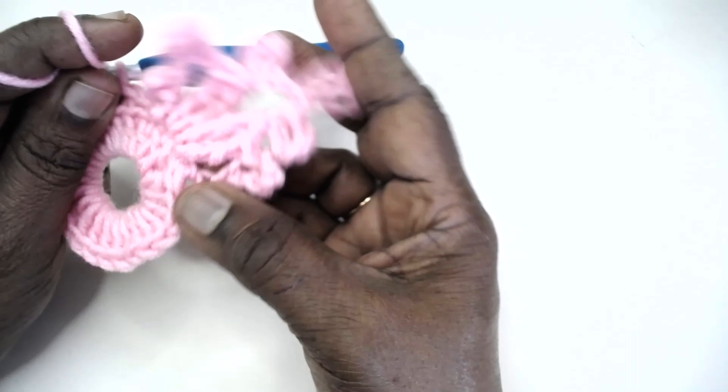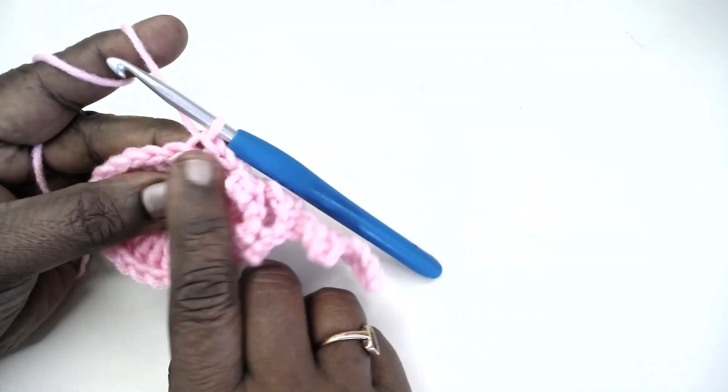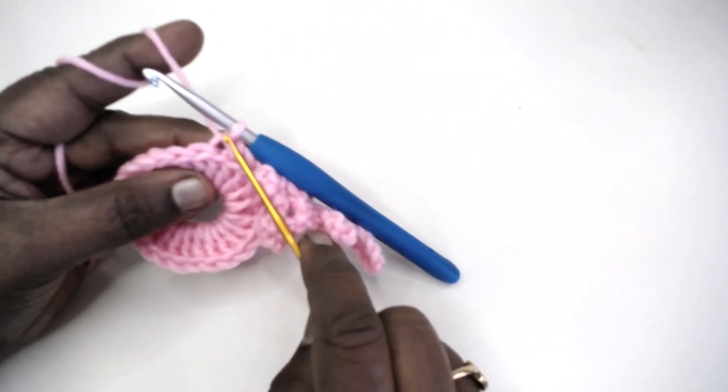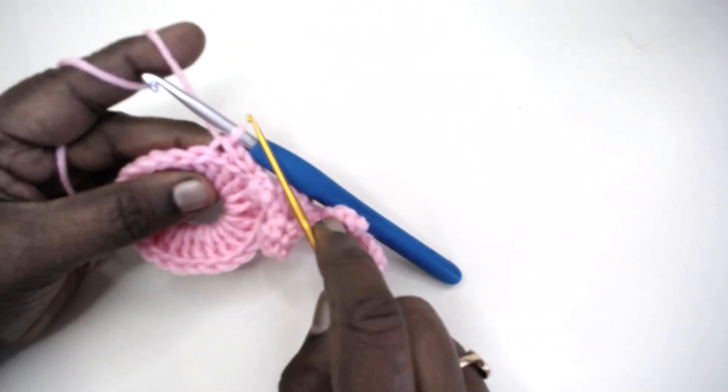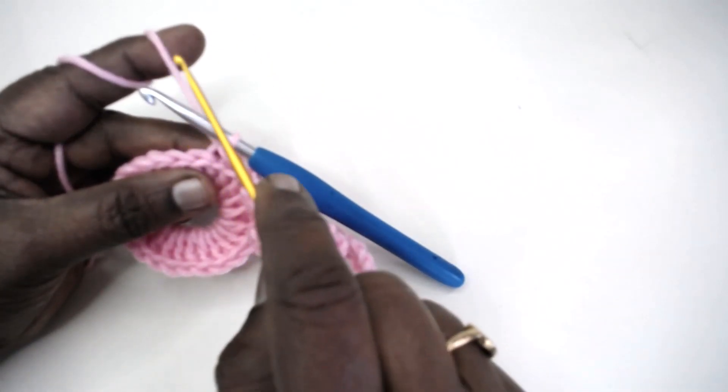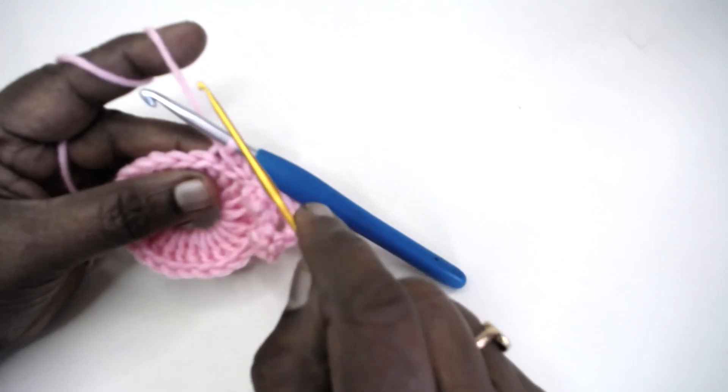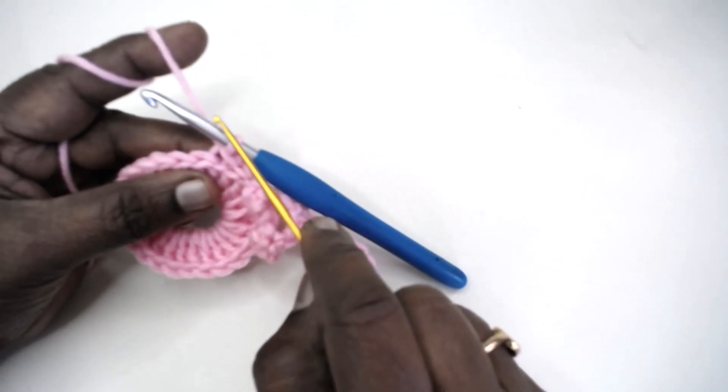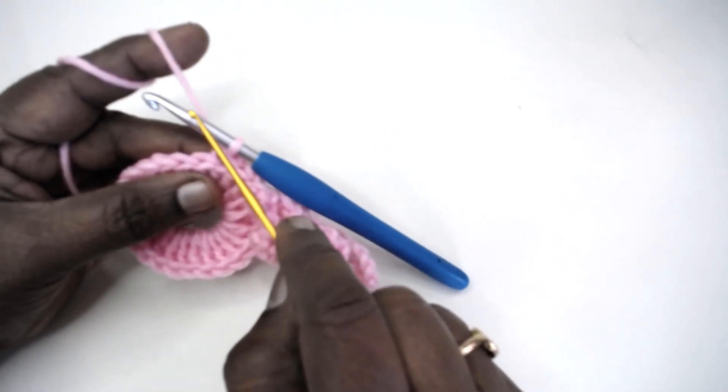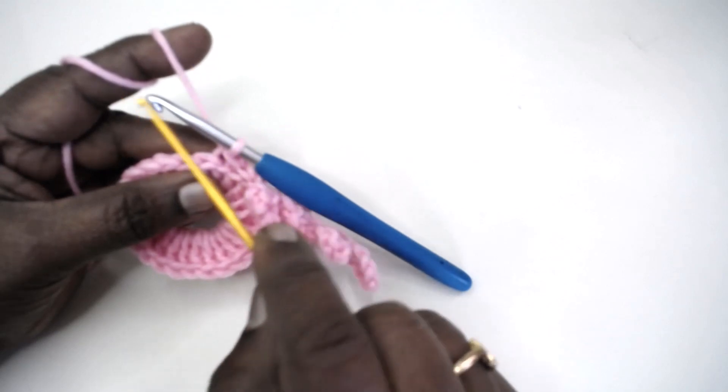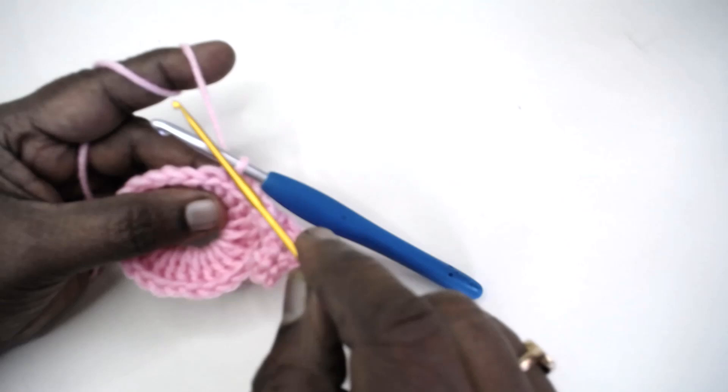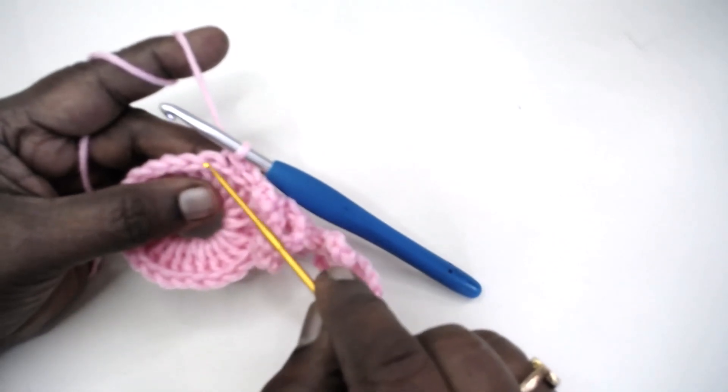So you make chain 1, small picot, chain 1, large picot, two trebles in the same stitch, then make the trefoil: chain 7, slip stitch to the first chain; chain 9, slip stitch to the first chain; chain 7, slip stitch to the first chain. Make two trebles in the next double crochet and then complete the large picot and the small picot, slip stitch, and continue the stitch repeat all around.